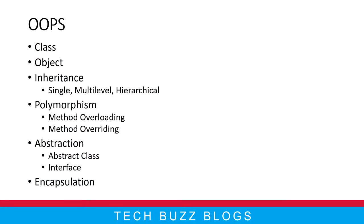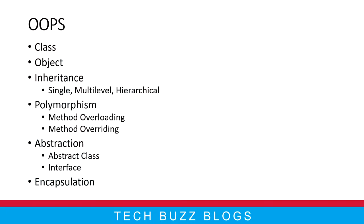It has a couple of concepts, so let's see in detail in future videos. The concepts we are going to cover are: class, object, inheritance — and inheritance has a couple of types: single, multi-level, and hierarchical. Polymorphism has method overloading and method overriding, which we can call compile-time or runtime polymorphism. We also have abstraction, which can be achieved two ways: abstract class and interface.